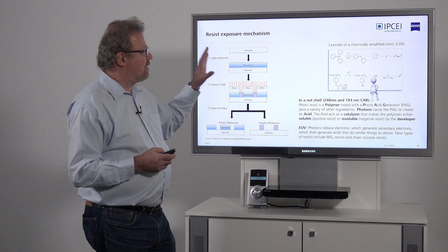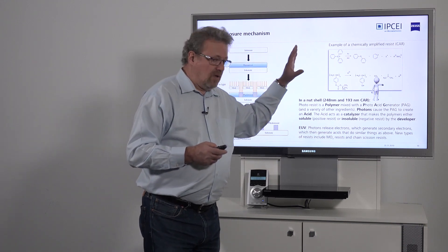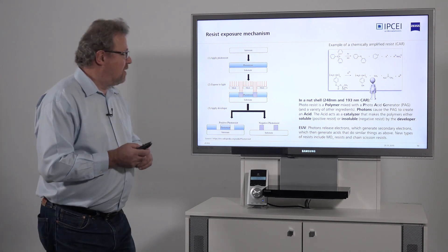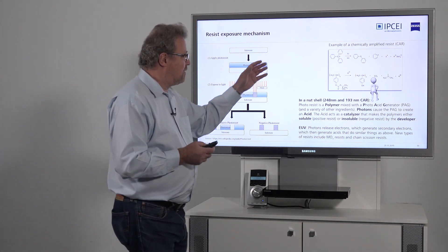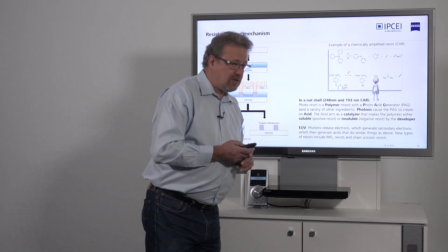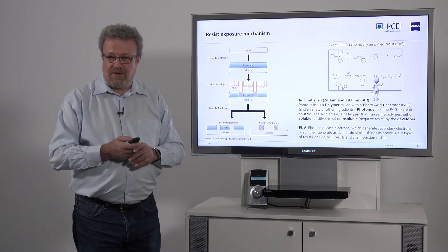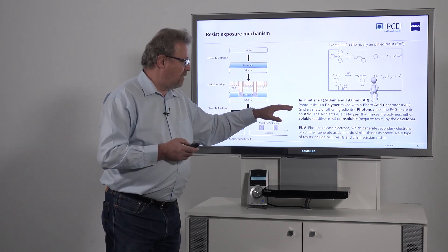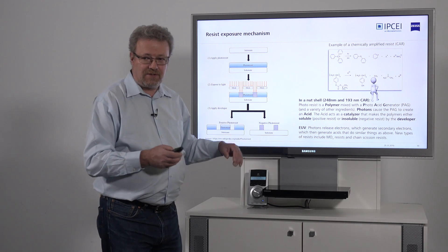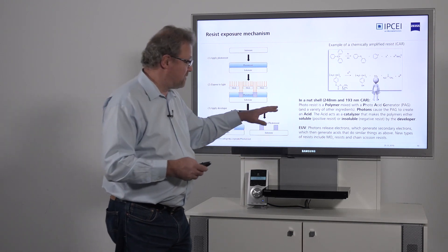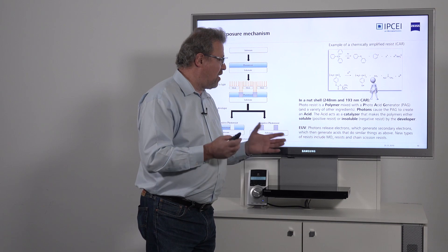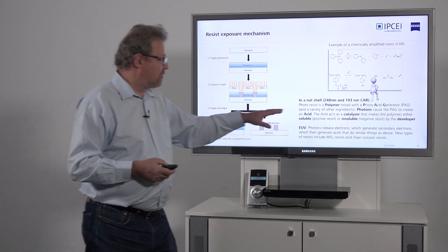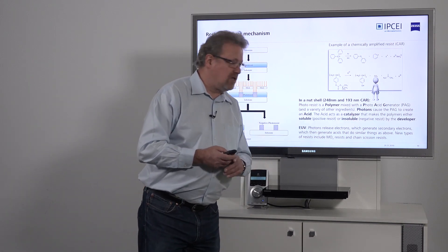Today the workhorse of photoresists are the CARs — chemically amplified resists. If you like, you can spend some time trying to decipher those chemical equations here. In a nutshell, what I think is sufficient to know as a lithographer or a physicist: photoresist is a polymer that is mixed with several compounds, the most important one being the so-called photoacid generator.